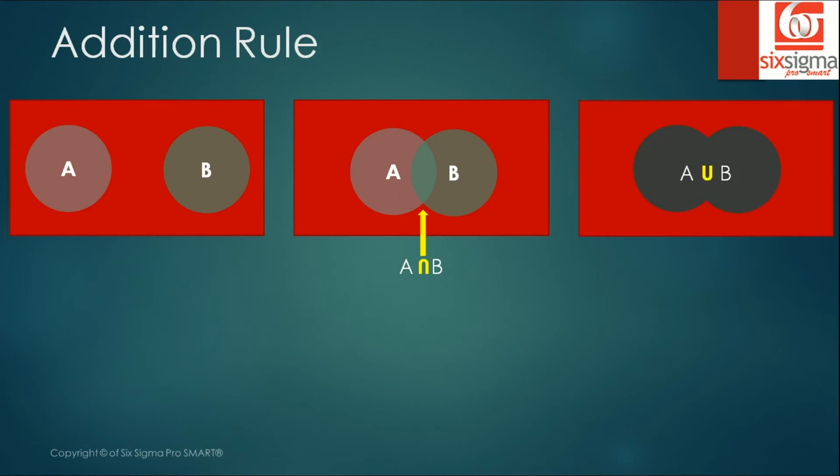Whatever area is common or overlapping between the two sets is called A intersection B. The other possibility is A union B. A union B takes into account whatever is a part of A or a part of B but it doesn't double count the intersection portion because intersection is common to A and B both. So a union function basically excludes the duplicacy or redundancy.